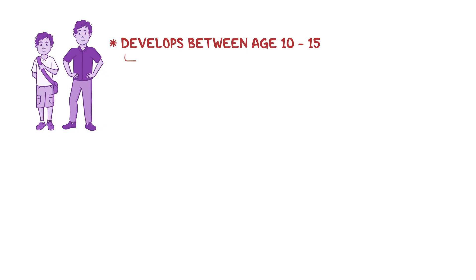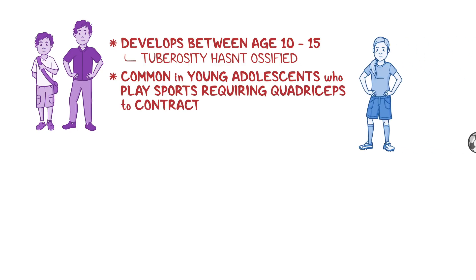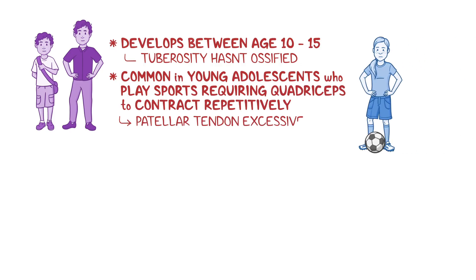Osgood-Schlatter disease typically develops between the age of 10 and 15, when the tuberosity hasn't ossified yet and therefore isn't hard enough to resist traction of the patellar tendon. This is why the disease is very common in young adolescents who play sports requiring the quadriceps muscles to contract repetitively, causing the patellar tendon to excessively strain on the not-yet-ossified tibial tuberosity.